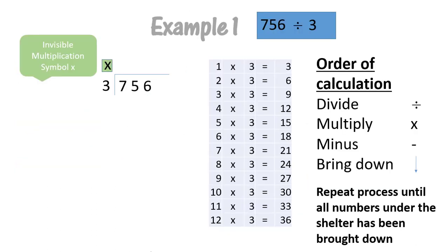Let's look at a few examples. Example 1. In this example, remember you have to know your timetables — we have to know our three timetables and our order of calculation. We have to find out how many times three goes into the number 756. So let's start.